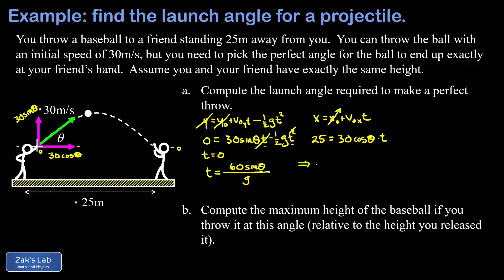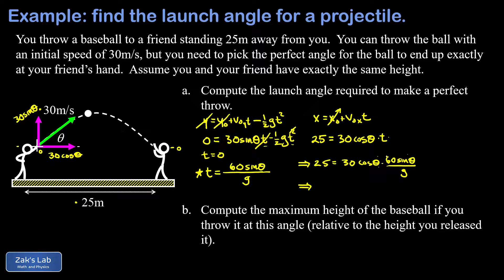Now we put the two equations together by substituting t equals 60 sine theta over g into the x equation, giving: 25 equals 30 cosine theta times 60 sine theta over g. We collect the sine and cosine terms and use the identity that 2 times sine theta times cosine theta equals sine of 2 theta. We split off a factor of 2 from the 60, turning it into a 30, and substitute 9.8 for g.